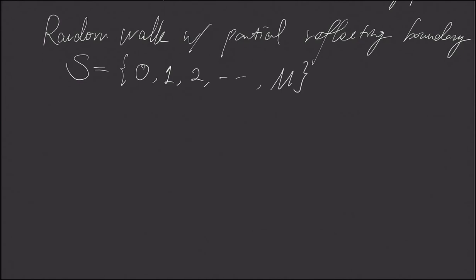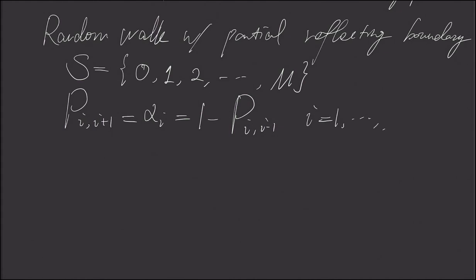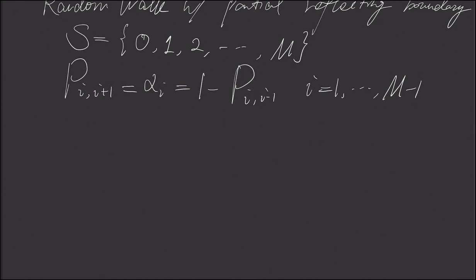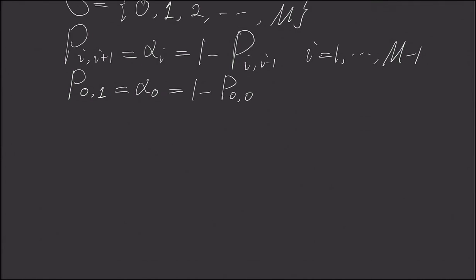In total, we have m plus 1 states. The probability from state i to i plus 1 is αᵢ, and the probability from state i to i minus 1 is 1 minus αᵢ. This means we can either go up or down for the m minus 1 intermediate states. If we are at the left boundary, we have α₀ chance of moving into state 1, and 1 minus α₀ chance of staying at that state.